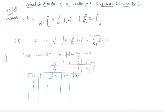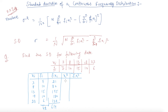Filling in the values: xi = 3, 8, 13, 18, 23 and fi = 7, 10, 15, 10, 6. The fi·xi products are 21, 80, 195, 180, 138 — giving Σ(fi·xi) = 614. The xi² values are 9, 64, 169, 324, 529. Σfi = 48.